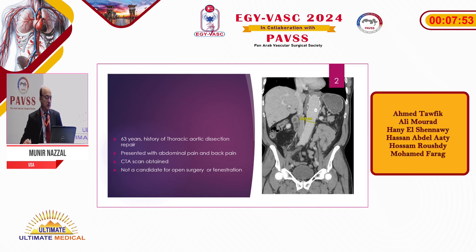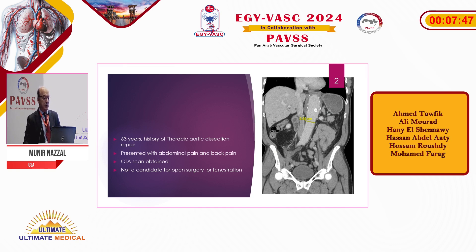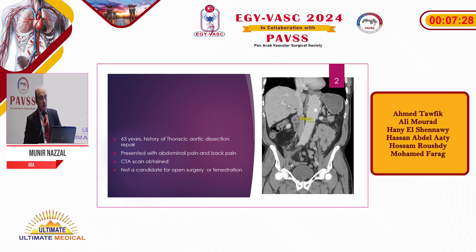This is a patient who is about 63 years of age, and he has a history of thoracic aortic dissection and repair. He presented with abdominal pain and back pain. A CAT scan was done and found that we have a larger aneurysm in the abdomen now. The patient is high risk for any open surgery, and he is not a good candidate for fenestration because of the nature of the aneurysm.